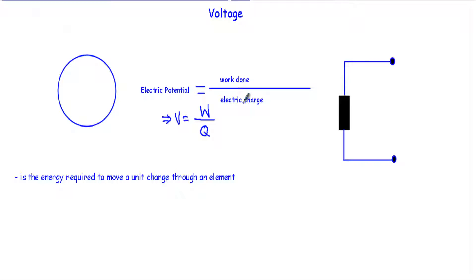In this video I will talk about voltage and electromotive force. The electric potential or electric voltage at any point in an electric field is defined as the work done in moving a unit charge from infinity or from zero potential to that point against the electric field. In equational form: electric potential equals work done divided by electric charge.